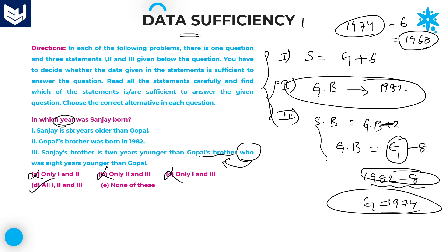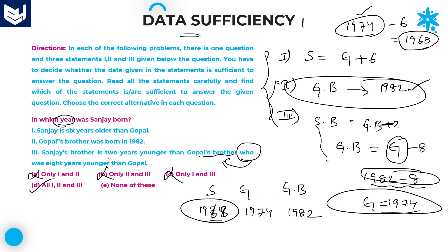So Sanjay was born in 1968. Sanjay is 6 years older than Gopal, so Gopal's date of birth is 1974. There is a difference of 8 years between Gopal and Gopal's brother, so Gopal's brother's date of birth is 1982. It satisfies all conditions. Sanjay was born in 1968, Gopal in 1974, and Gopal's brother in 1982. This is the answer — you get it by combining all three statements. Option D is the right answer.